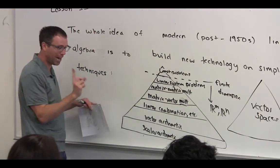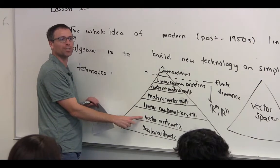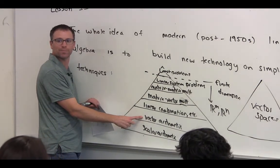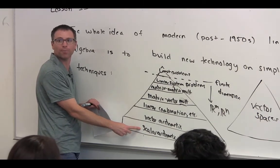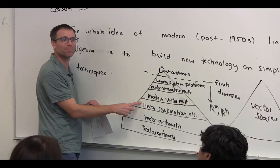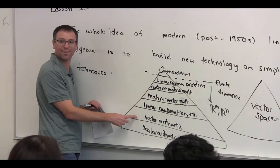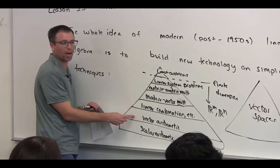But what I wanted to point out here to give an idea of why I was having you study this, how did we build vector arithmetic? What did we do? We did multiple simultaneous scalar arithmetic stuff. How did we build linear combinations? We did multiple vector arithmetic operations.